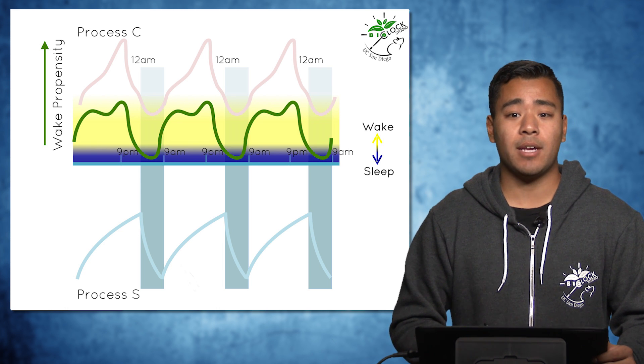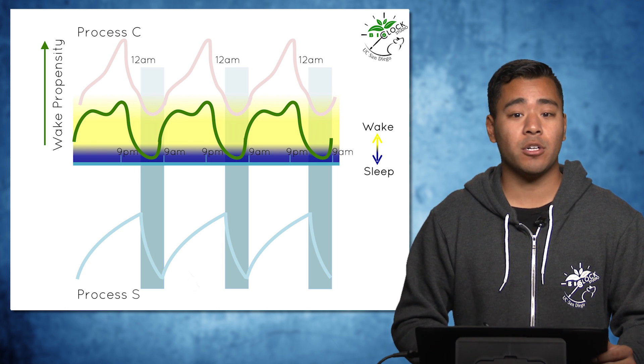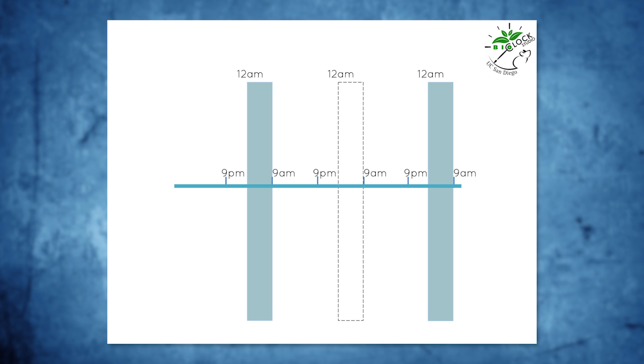So now that we know how a normal sleep-wake cycle is formed, what happens when we put stress on our body and don't sleep for a night? Whether it's pulling an all-nighter, staying awake for the night shift, or binge watching your favorite TV show, not sleeping will have adverse effects on your normal sleep-wake cycle.